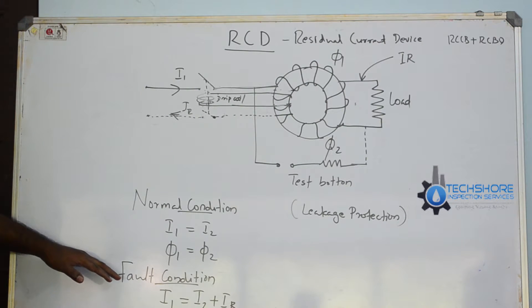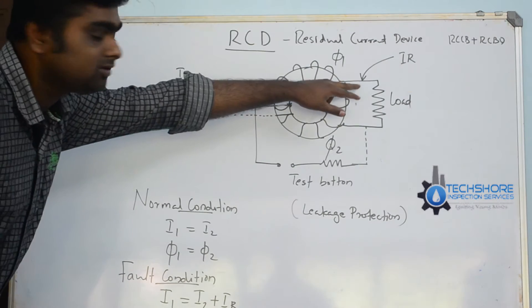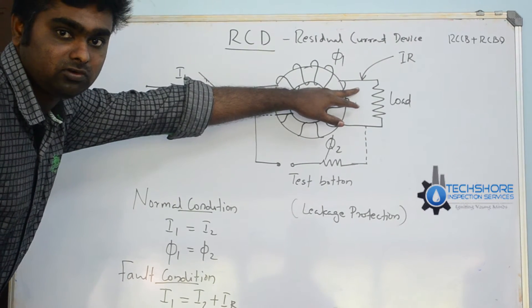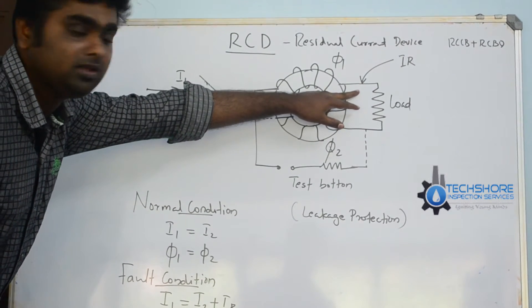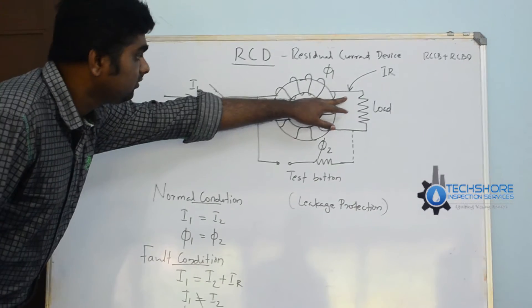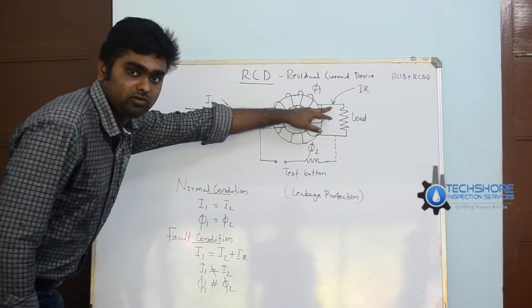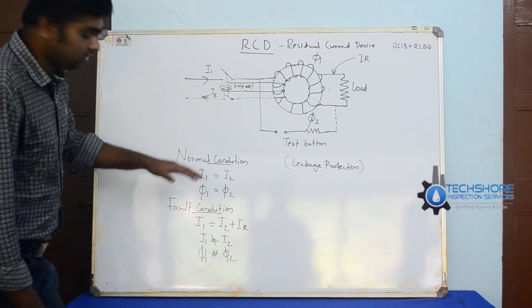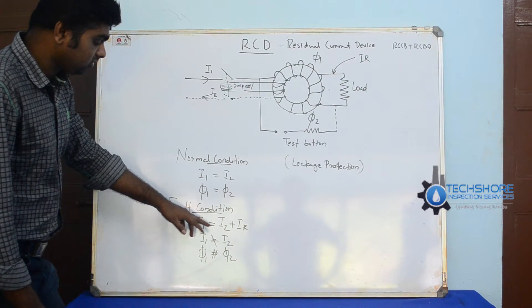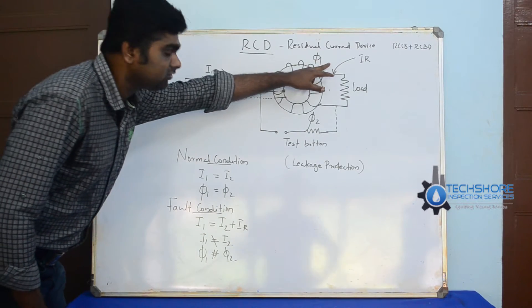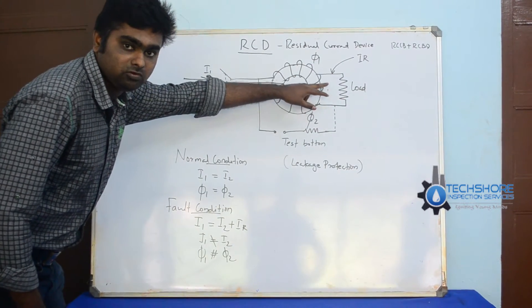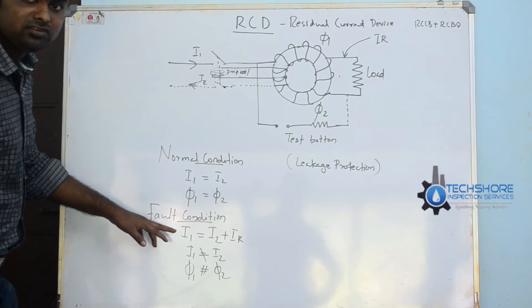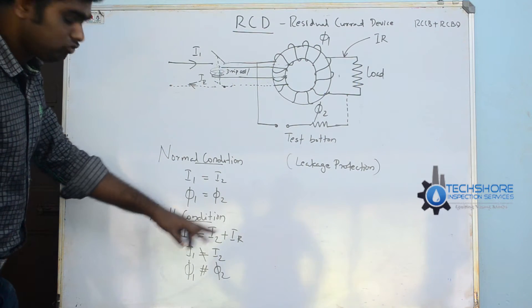If it is a fault condition, that means one person is touching the load which gives a shock. He will be shocked or the current is going to the earth. So there will be changes in current. I1 is not equal to I2. I1 is equal to I2 plus Ia. For example, Ia current is passing through the earth.